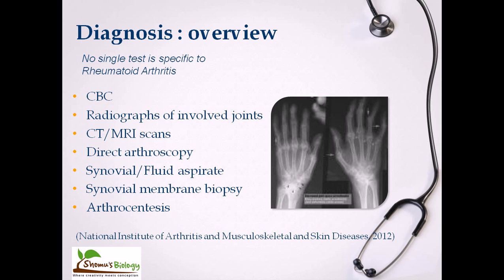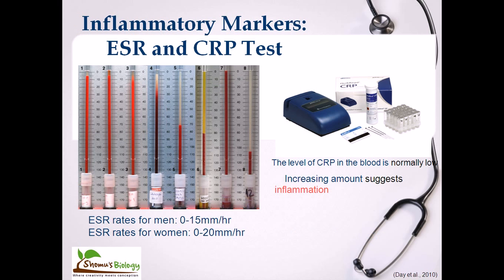First, the ESR and CRP tests can be performed — these are inflammatory markers. Once a patient reports symptoms like immense joint pain, stiffness, locking of joints, difficulty moving, and nodule formation, the physician suspects arthritis. To determine what kind, they use inflammatory markers. These are very common and inexpensive types of tests — ESR and CRP.